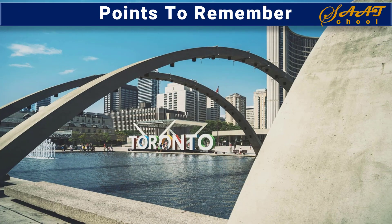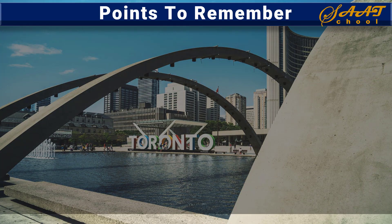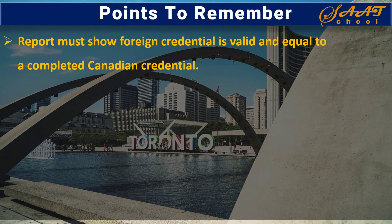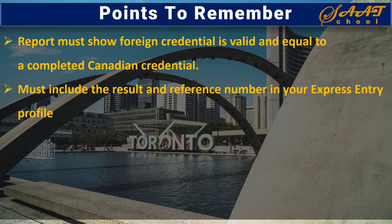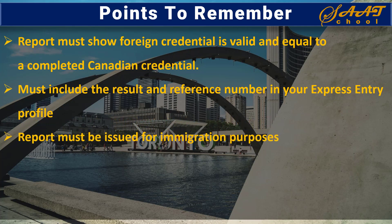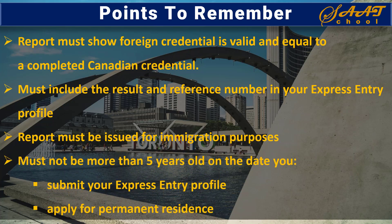Your ECA report must show that your foreign credential is valid and equal to a completed Canadian credential. This is a very important point. You must include the result and reference number in your Express Entry profile. Your ECA report must be issued for immigration purposes, and must not be more than five years old on the date you submit your Express Entry profile and apply for permanent residence.